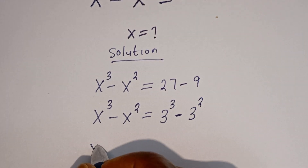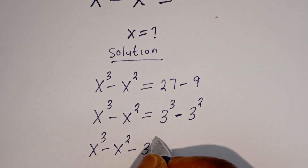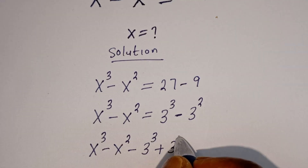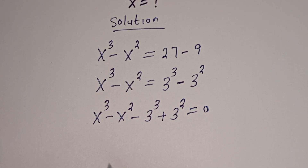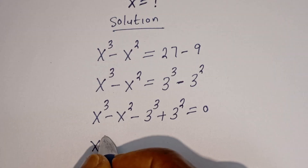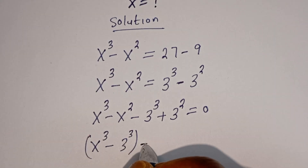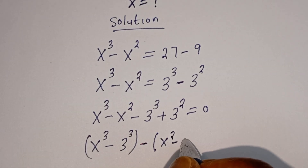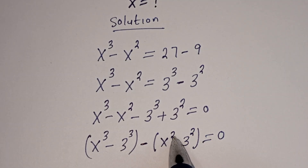Then we have S to the power of 3 minus S squared. If you bring the 3 cubed to this side it becomes minus 3 to the power of 3, and if you bring the minus 3 squared to this side it becomes plus 3 squared, equal to 0. So we have S cubed minus 3 cubed, then minus bracket S squared minus 3 squared, equal to 0.